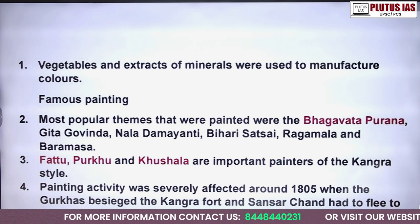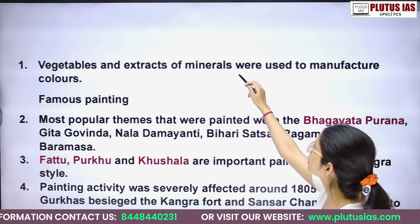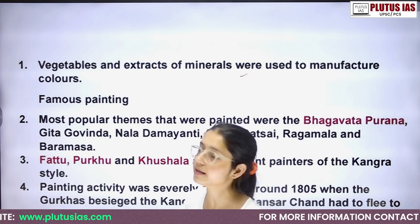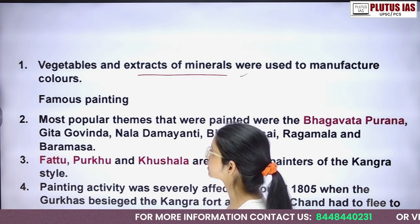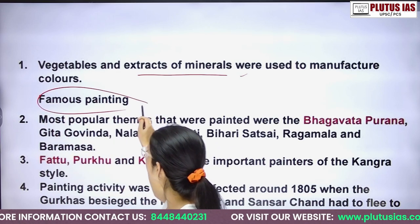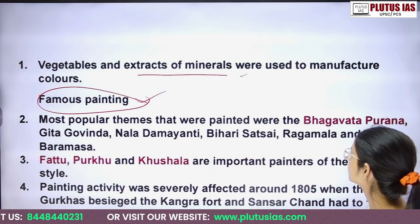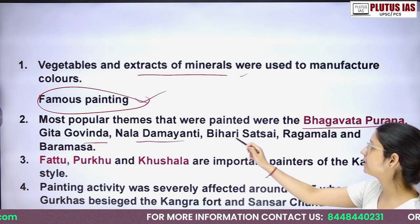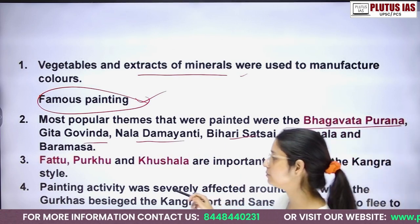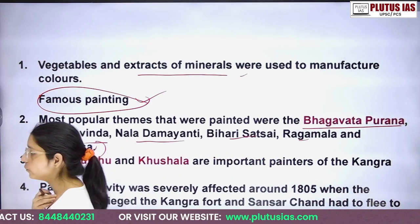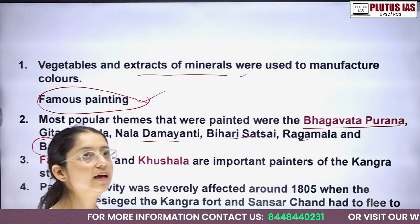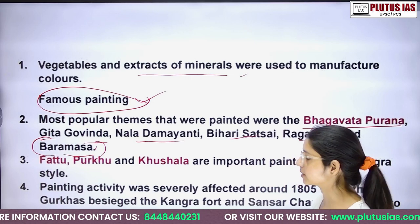The colors used in Kangra paintings were derived from vegetables and mineral extracts. The famous themes of the Kangra School include the Bhagavata Purana, Gita Govinda, Nala Damayanti, Bihari Satsai, Ragamala, and Baramasa.